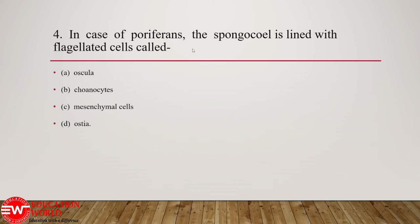Question number 4: in case of Porifera, the spongocoel is lined with flagellated cells called — oscula, choanocytes, mesenchymal cells, or ostia. In Porifera, which are diploblastic animals, they have two layers in the body wall. The outer layer is known as the dermal layer, the inner layer is the gastral layer. The dermal layer is lined with pinacocytes, whereas the gastral layer is lined with special cells known as collar cells or choanocytes.